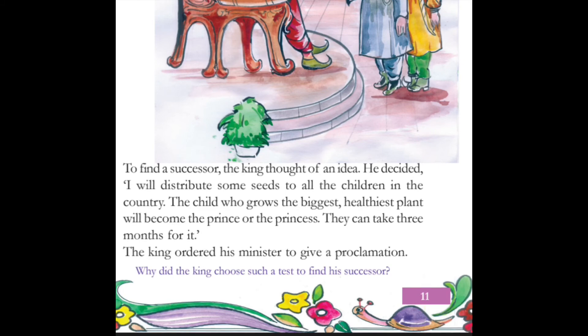Why did the king choose such a test to find his successor? Why did he choose growing a plant as the test? Think about it — what does the king value, and why would gardening be the right way to find the next ruler?